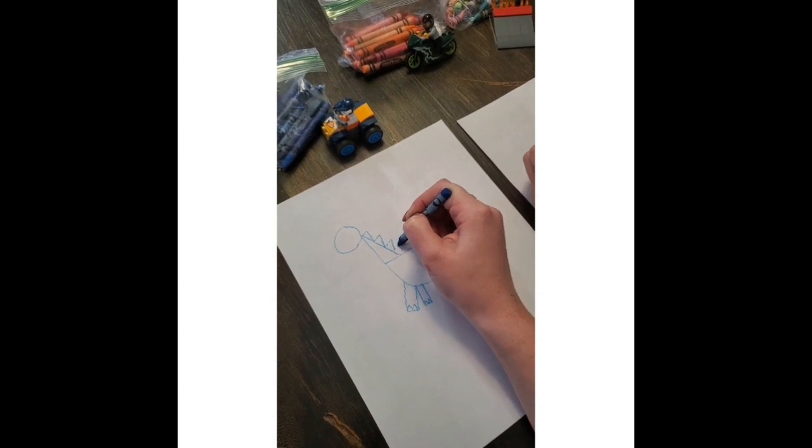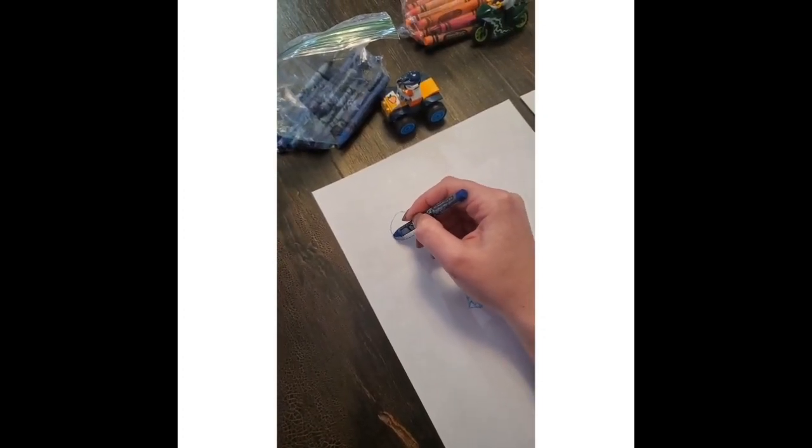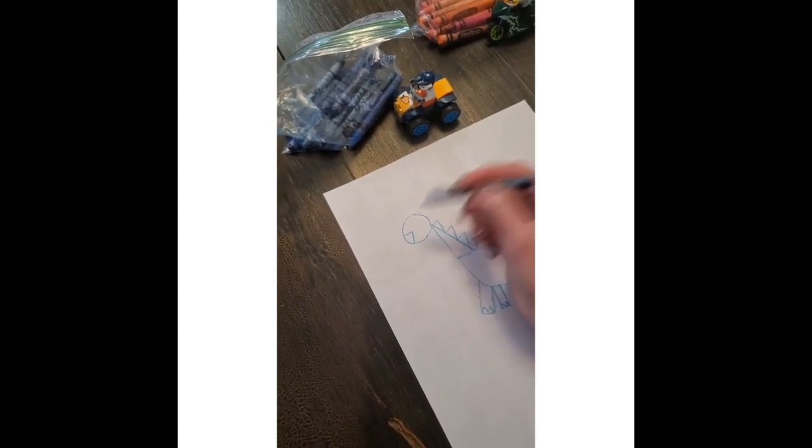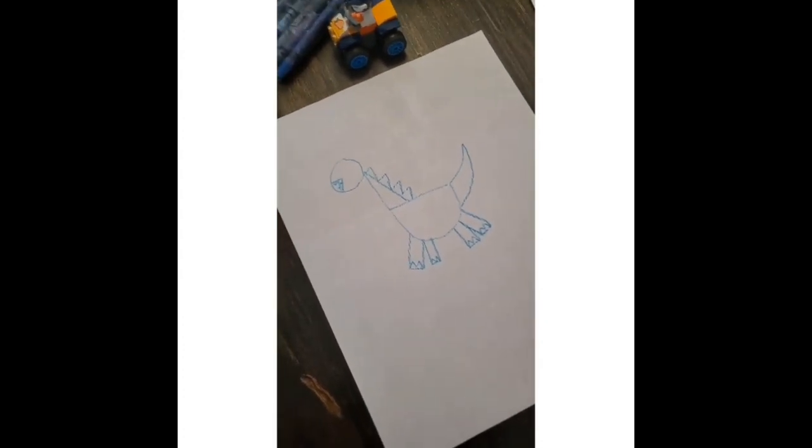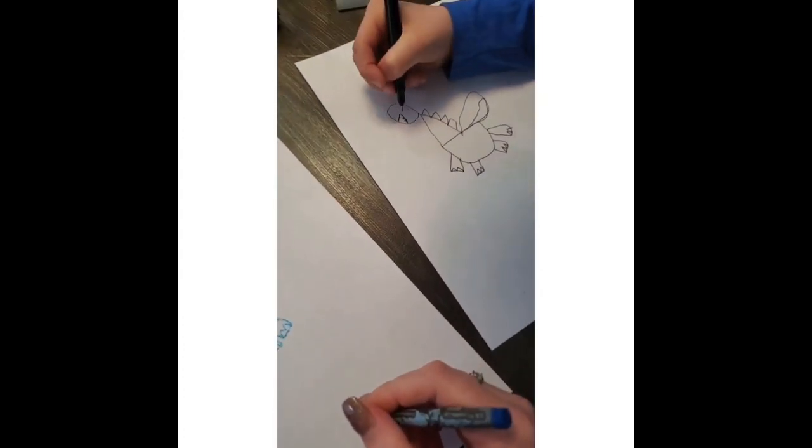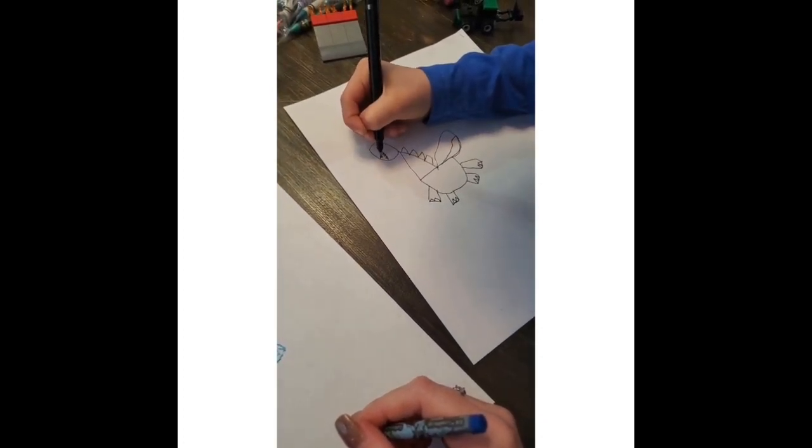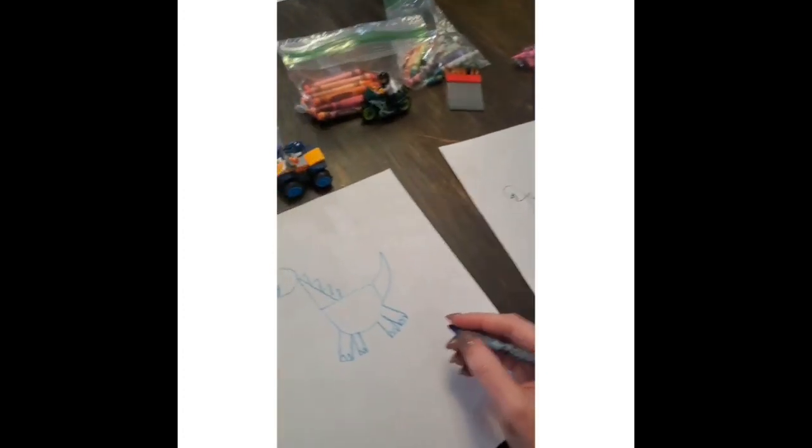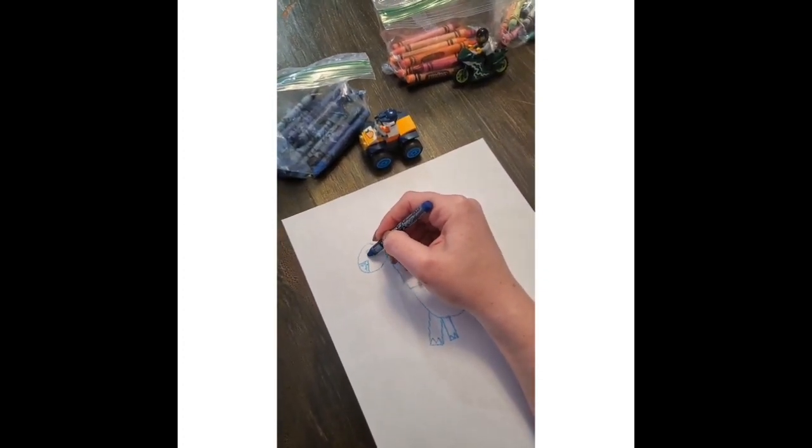So this is the neck right here, right? So we're going to draw them all along like that. Now we're gonna draw the mouth. You can get really sharp teeth.